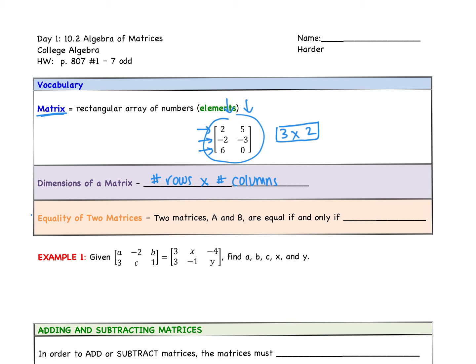Next thing I want to talk about is when two matrices are equal. The equality of two matrices. Two matrices, A and B, are equal if and only if all corresponding elements are equal. An element is each number in the matrix. So all the corresponding numbers in the matrices need to be the same.